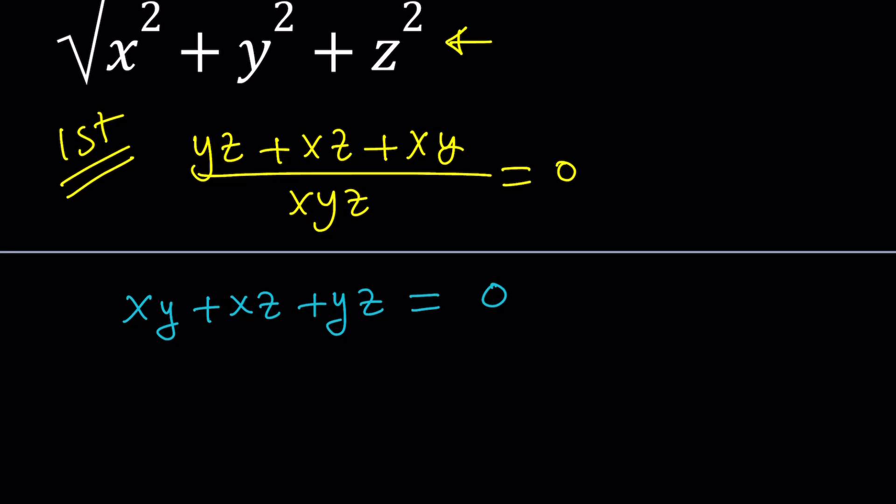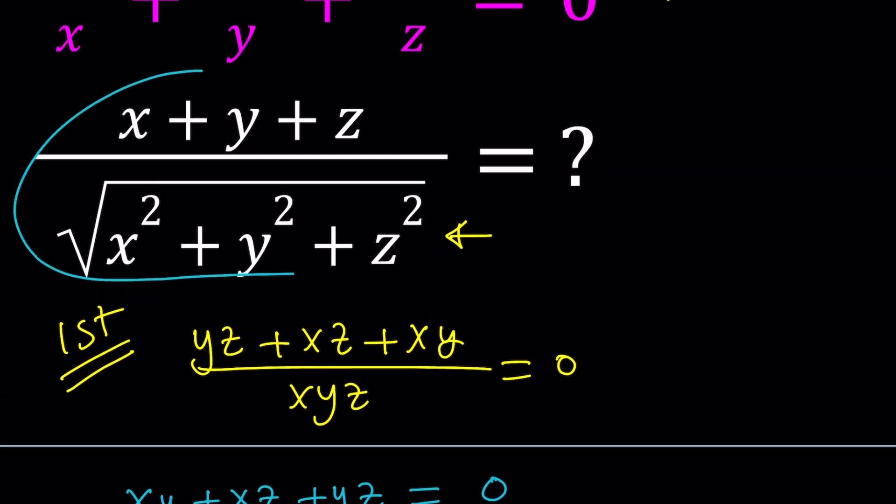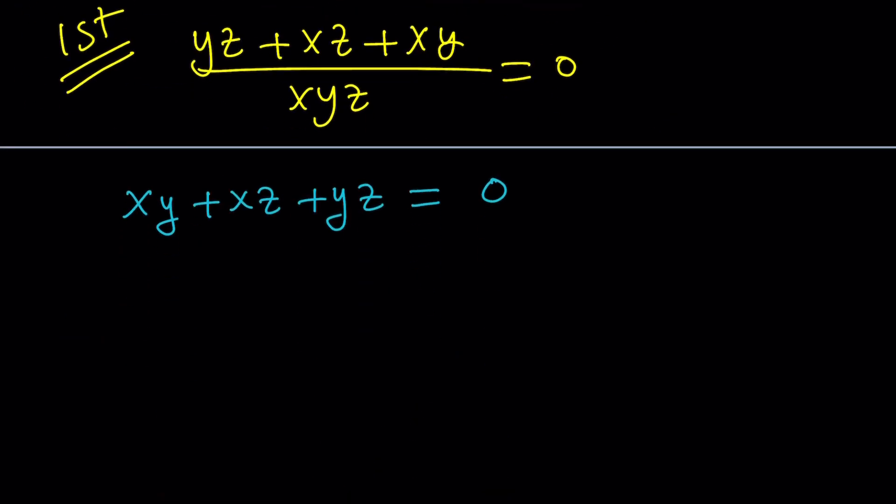I just changed the order to kind of follow the usual way to write these things, like alphabetical order. What do we get from here? What are we supposed to find? We're supposed to evaluate this expression, and I'm thinking maybe we can go ahead and take the numerator and square it. Because this expression actually comes up in the square of x plus y plus z.